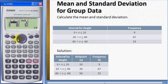After you make sure your data is correct, then you press AC and then you press shift 1, 5, number 2 to find the mean.